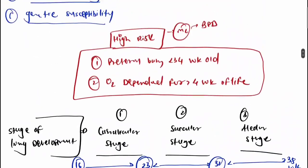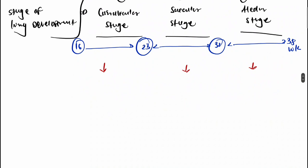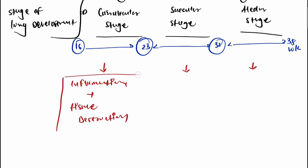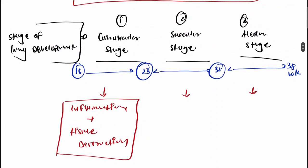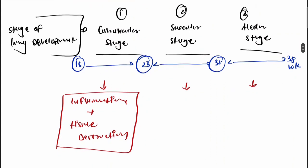Due to antenatal risk factors, if these are present during the canalicular stage, they are responsible for inflammation and tissue destruction. In the saccular stage, there is aberrant tissue repair that causes fibrosis formation.